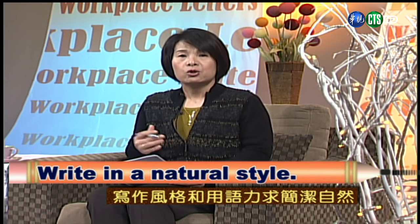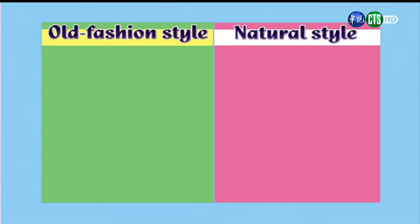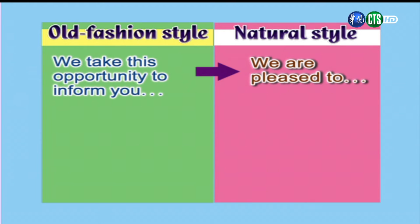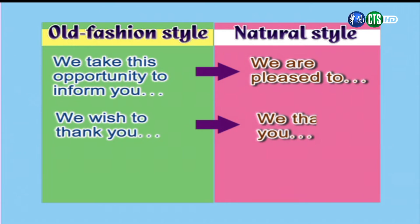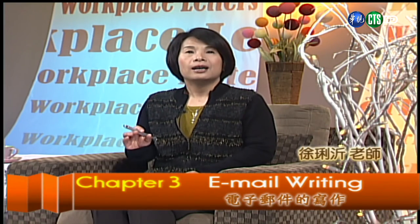接下來我們來看在email的寫作裡頭，你也要write in a natural style。我們來看old fashion style跟natural style的差別：比如說old fashion說 'We take this opportunity to inform you'，其實你就可以說 'We are pleased to inform you' 或 'We are pleased to tell you'。Old fashion說 'We wish to thank you'，你就可以很簡單說 'We thank you'。'In response to your request of' 很落舌，你就可以直接說 'We appreciate...' 在這樣子的表達裡頭可以盡量精簡，讓你的email讀起來比較口語化。